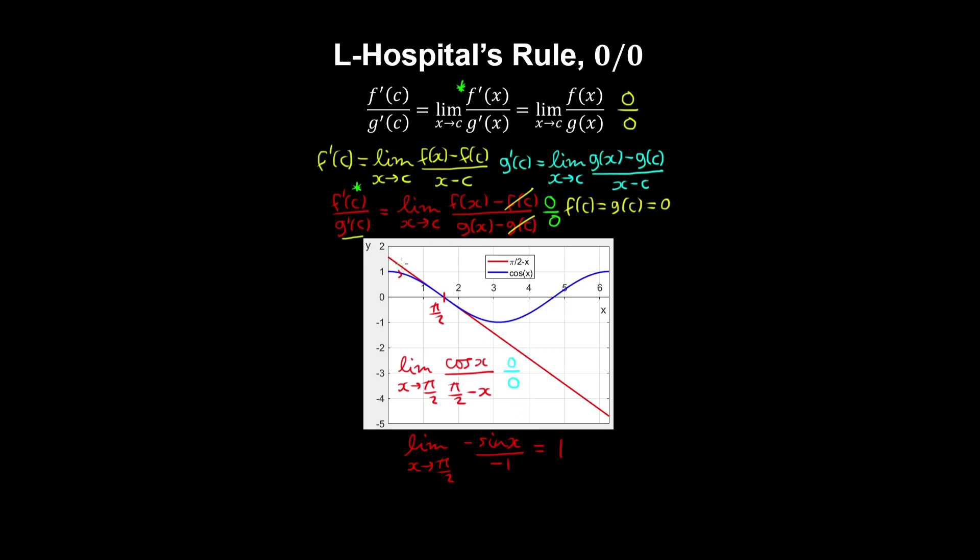So we can observe that the derivatives, or the slopes of the tangent to the curve, of both functions, become the same as x approaches π/2. And this is true from both sides.